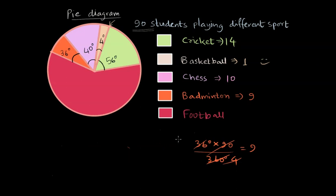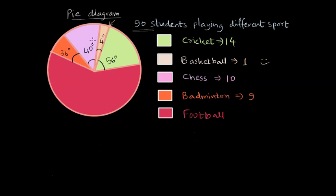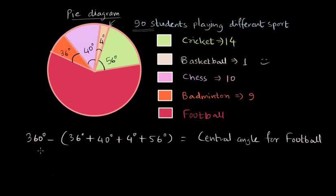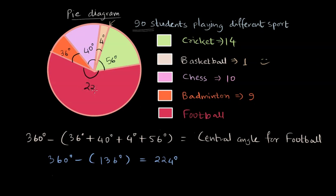The pink color represents football, but we don't know its central angle — that's a little tricky. Since the total central angle of a circle is 360 degrees, we subtract all known angles: 360° − (36° + 40° + 4° + 56°) = 360° − 136° = 224 degrees. So the central angle for football is 224 degrees.